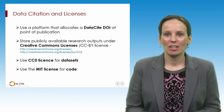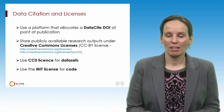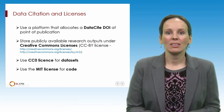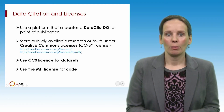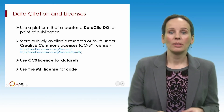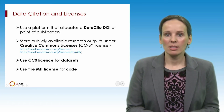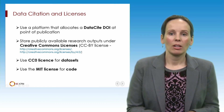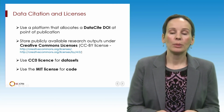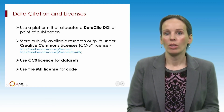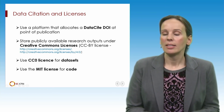If you decide to share your data online, keep a few things in mind. First, use a platform that allocates a data site DOI, or digital object identifier, at point of publication. Second, store publicly available research outputs under Creative Commons licenses. These copyright licenses give everyone — from individual creators to large companies and institutions — a simple, standardized way to grant copyright permissions to their creative work. The Creative Commons BY license is the most accommodating license offered; it is recommended for maximum dissemination and use of licensed materials. This license lets others distribute, remix, tweak, and build upon your work, even commercially, as long as they credit you for the original creation. Finally, use the CC0 license for datasets and the MIT license for software code.